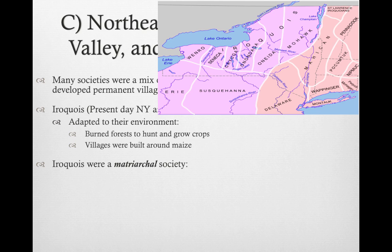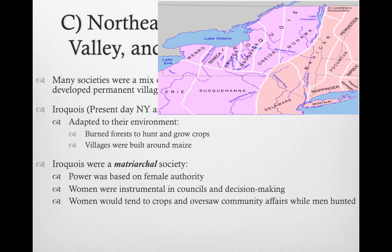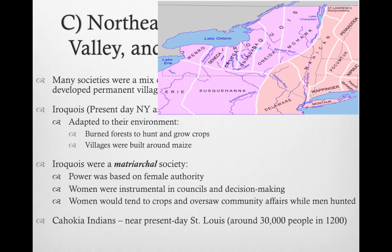The Iroquois were a matriarchal society, meaning power was based on female authority — the mother's side of the family, not the father's like most European families. Women were instrumental in councils and decision-making, tended to crops, and oversaw community affairs while men were off hunting. They played a very predominant role in society.